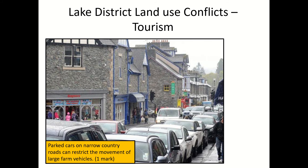Let's focus on tourism first. How does tourism cause conflicts? As you can see in the photo, tourism causes small villages such as Ambleside or Kendall to get very jam-packed with cars, and that can make the movement of farm vehicles in the area really difficult. So the farmers don't like the tourists sometimes because they clog the roads with cars.